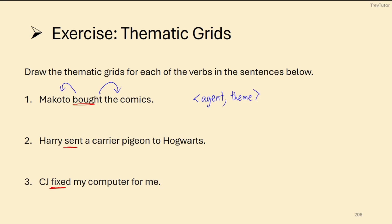What about Harry sent a carrier pigeon to Hogwarts? We need a sender, which is an agent. We need a theme, which is the thing being sent. And then we need a goal because that is where it's going. So for the theta grid for this, we would have agent, theme, and then also our goal afterwards.